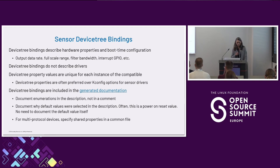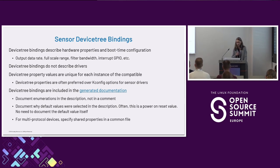Some devices support multiple protocols, so you may have a sensor that can sit on an I2C bus or a SPI bus. Rather than describing those properties twice in two separate bindings, you can describe them in a single common file that you then include in the SPI or I2C binding files accordingly.